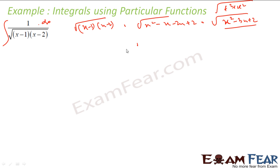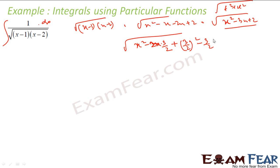Now x²-3x: if I write this, it is nothing but 2 into x into 3/2. So in this case I add and subtract (3/2)², and +2 is already there. So what I have done is: x²-3x+2, the -3x term I can write as 2·x·(3/2), meaning my b part is 3/2. So I write (3/2)² and also -(3/2)², and +2 was there.